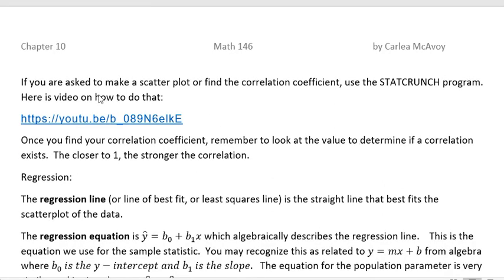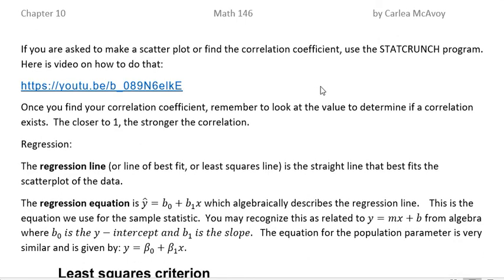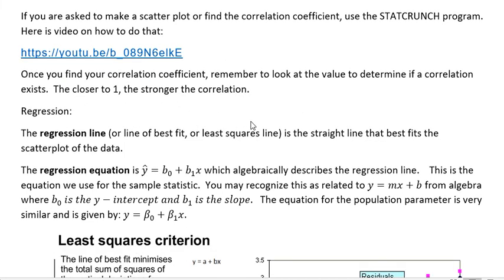And finally, if you're asked to make a scatter plot or find a correlation coefficient for my class, use the StatCrunch program. There's a video on how to do that. Once you find your correlation coefficient, remember to look at the value to determine if a correlation exists. The closer to 1, the stronger the correlation. All right, we'll talk about regression in our last video. Have a fantastic day.